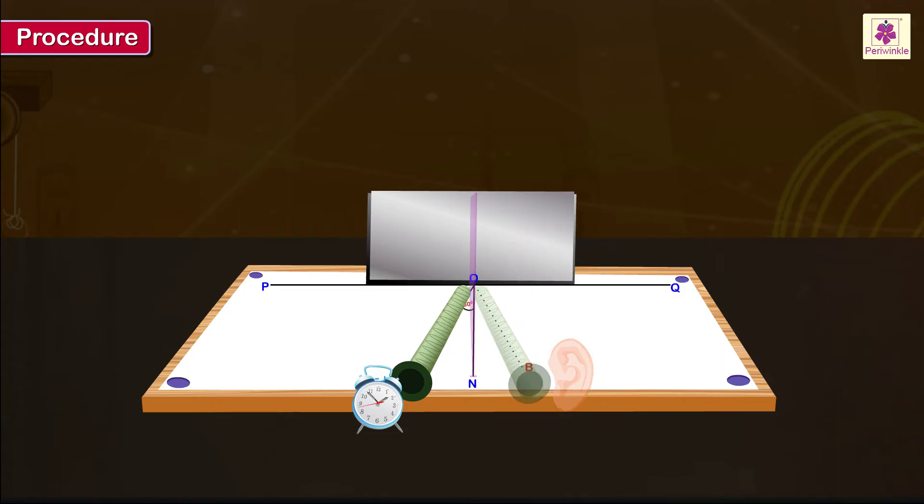Mark the position of the axis of the pipe making angle BON by carefully marking the point B on the paper. Then slowly raise the end B of the pipe keeping the O end fixed so that it does not lie in the same plane as the drawing paper. Angle BON still remains unchanged. Find if you can still hear the tick-tock sound through the pipe as before.